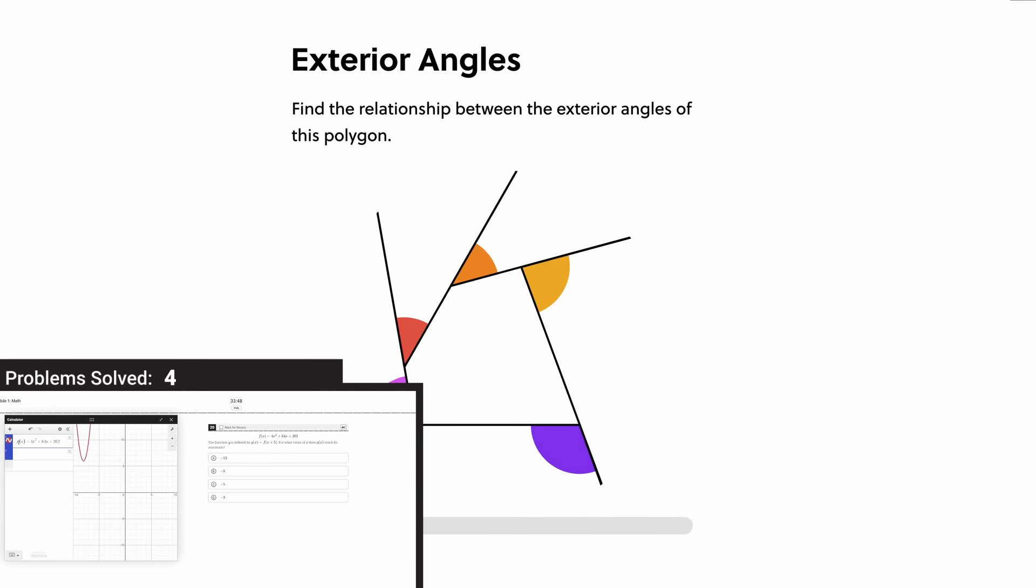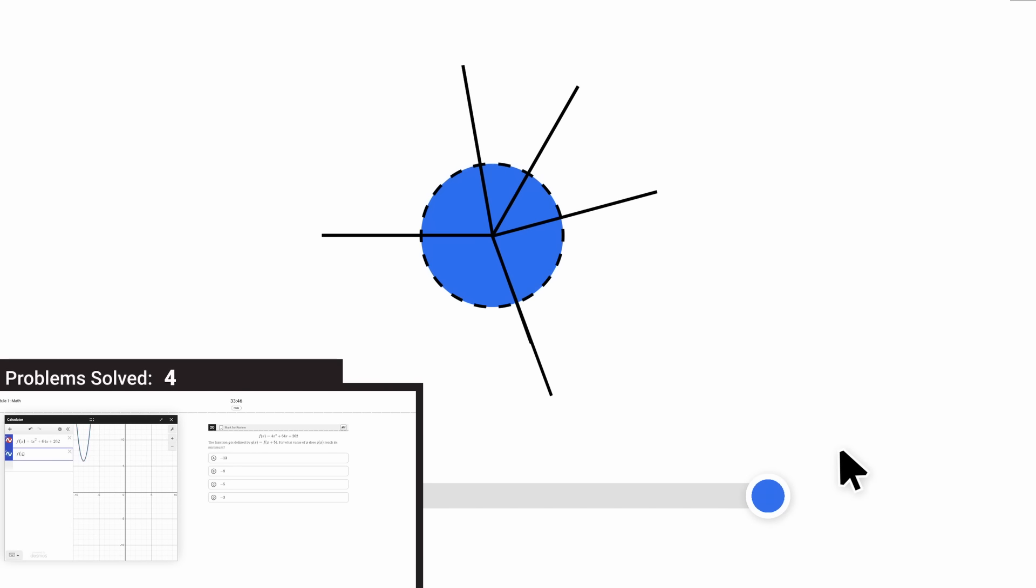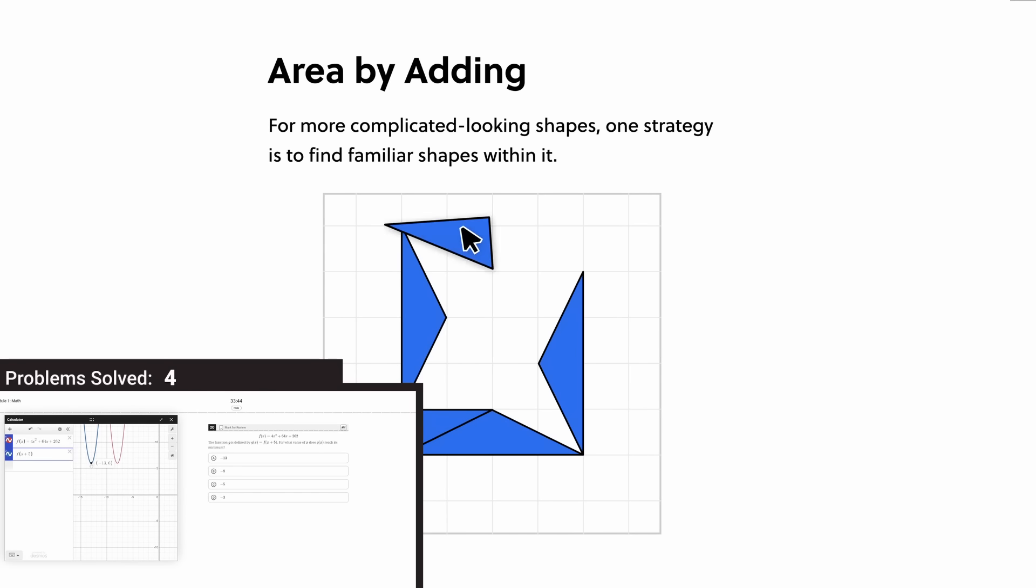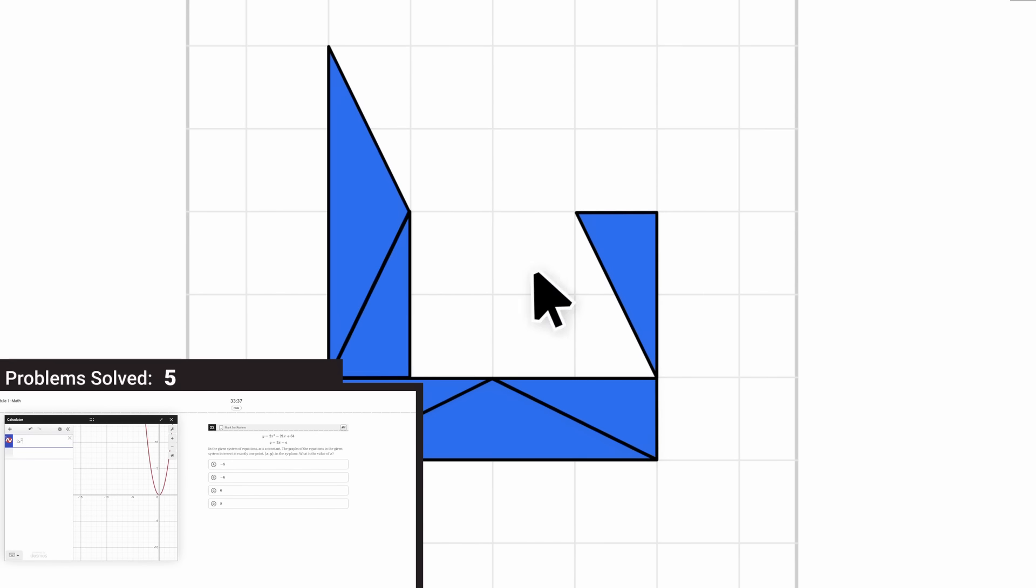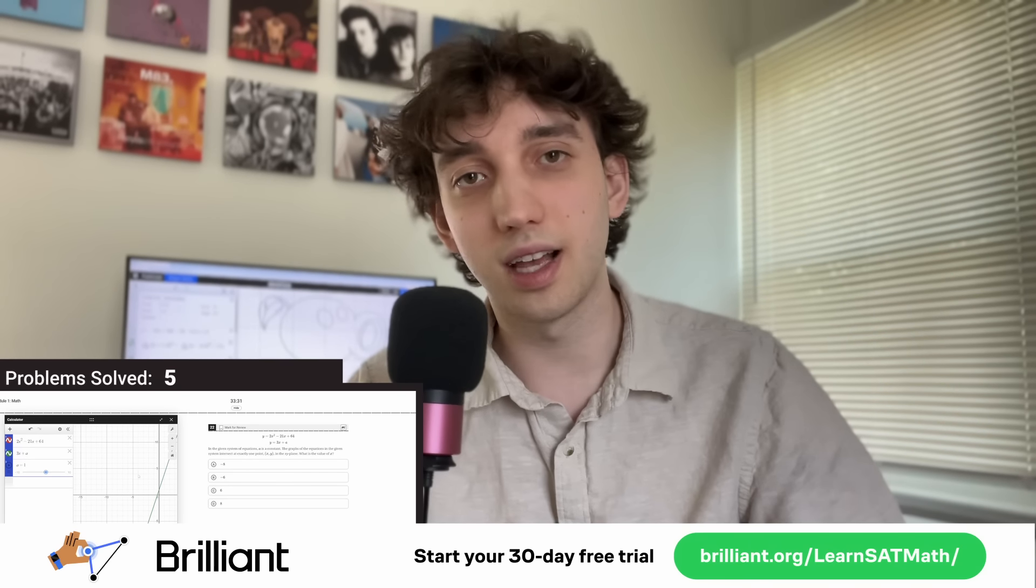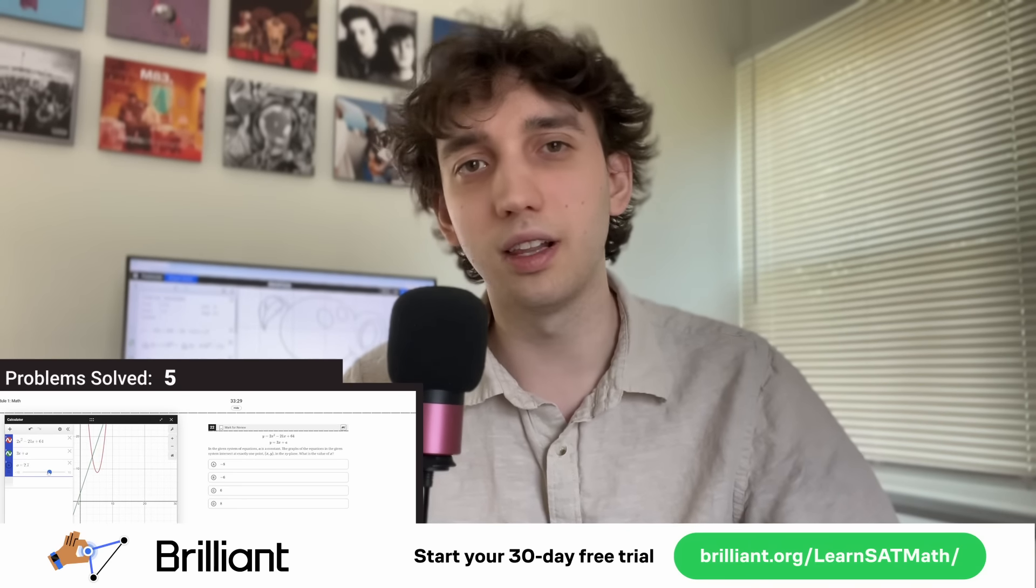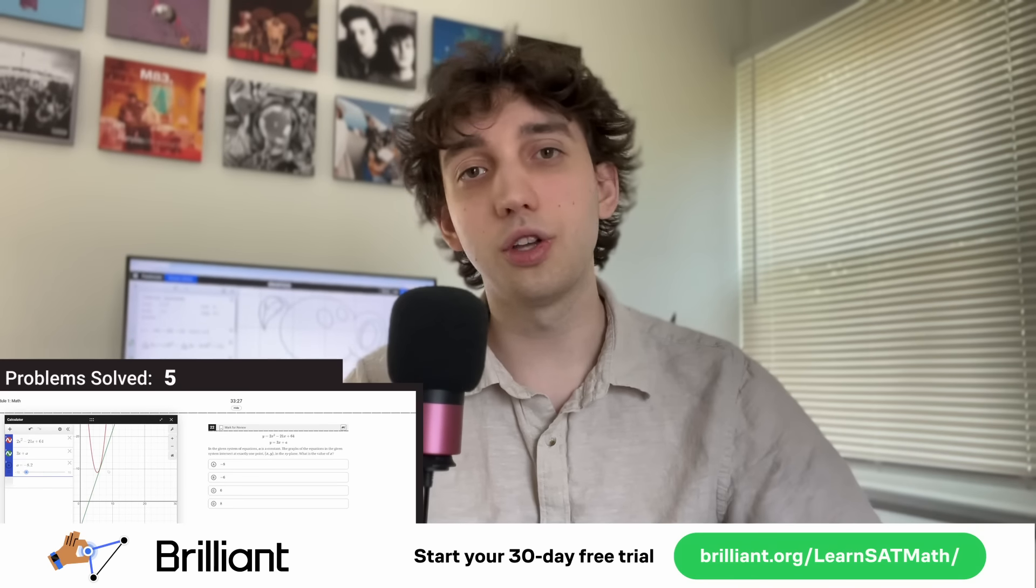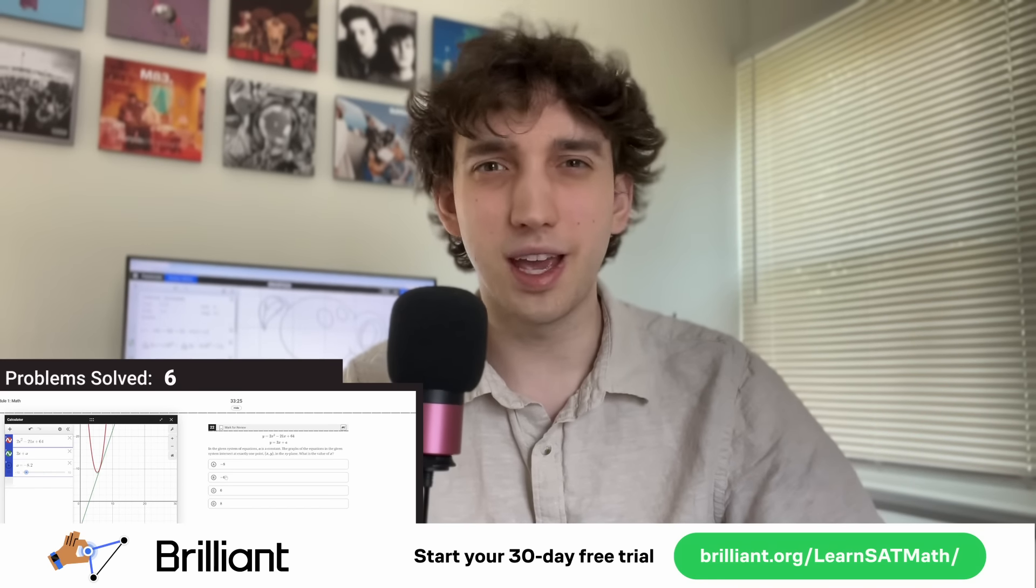You learn concepts through first principles with lessons that prioritize actual problem solving. Their measurement course in particular is a really great introduction to all the important geometry concepts you need for the SAT. And unlike most test prep, this is really well produced. You have these nice sleek animations. I mean, look at these. I am physically attracted to these angles. To get Brilliant for free for a full 30 days, you can go over to brilliant.org slash learnSAT math or just click on the link in the pinned comment below. You'll also get 20% off a premium annual subscription.